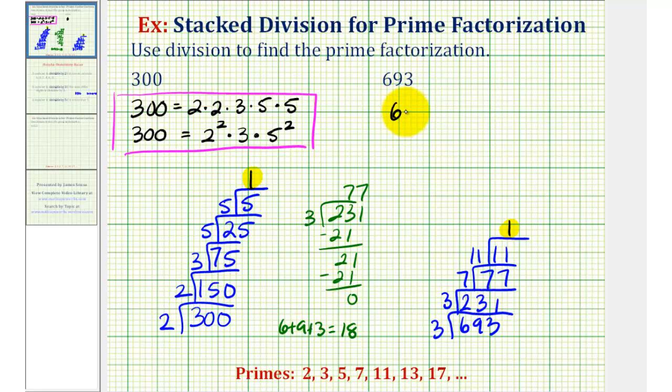We now know that 693 in prime factored form is equal to three times three times seven times 11. So stacked division can be used to find the prime factorization rather than using a prime factorization tree if you prefer. I hope you found this helpful. We'll take a look at one more example in the next video.